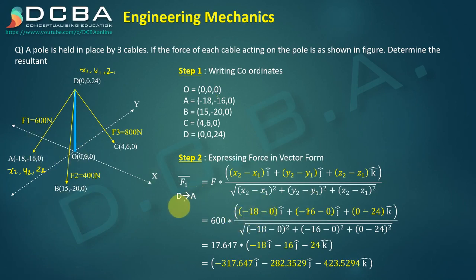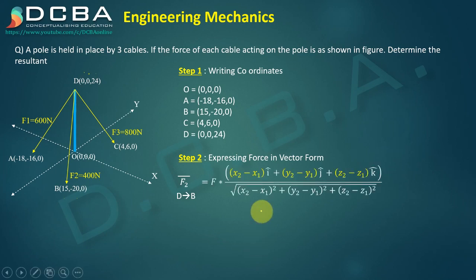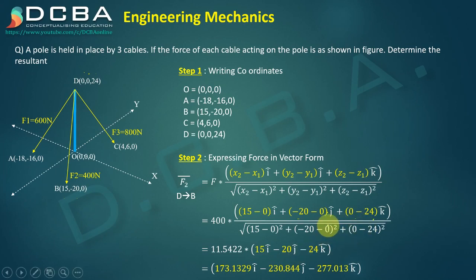Similarly solving for F2, it is going from which point to which point, D to B. So D will be again x1, y1, z1, B will be x2, y2, z2. F is 400 multiplied by x2, y2, z2, x1, y1, z1. You get 173.132 i cap - 230.844 j cap - 277.013 k cap.